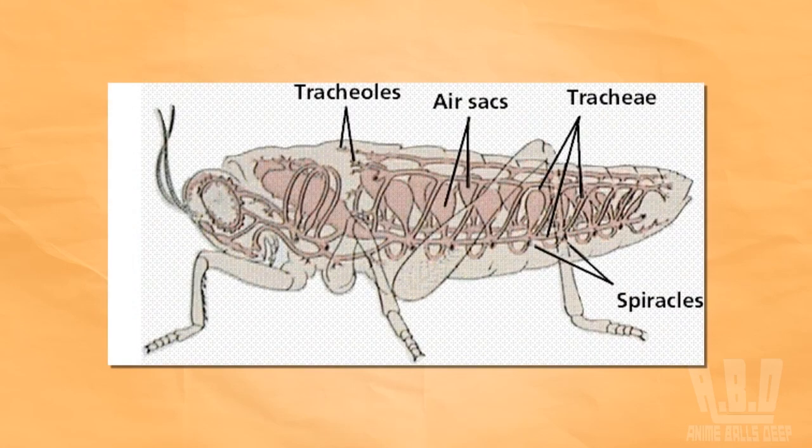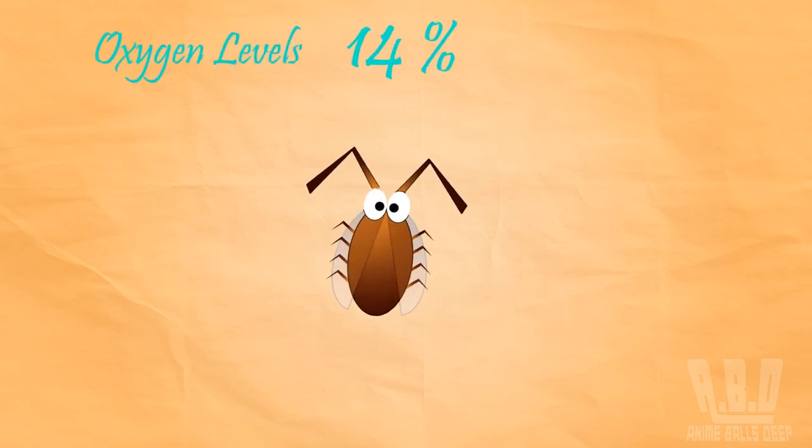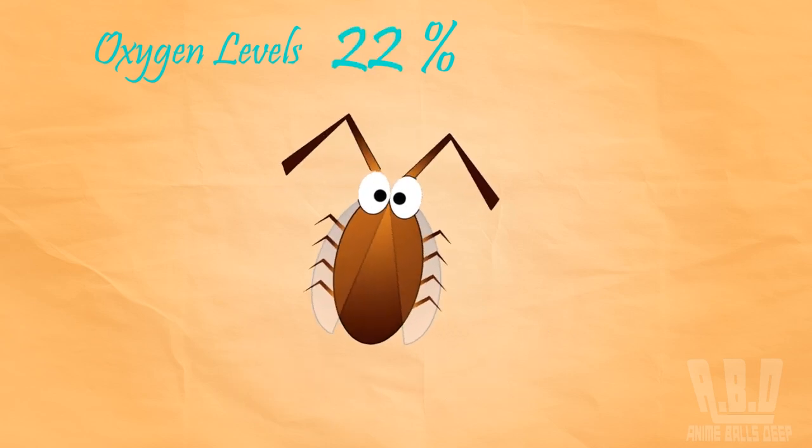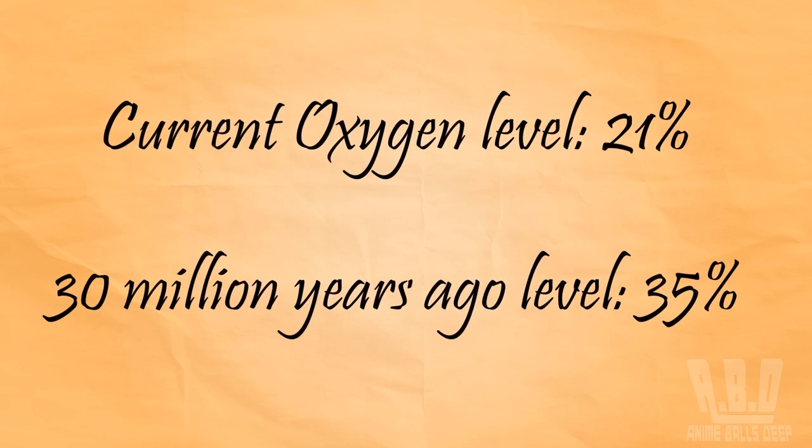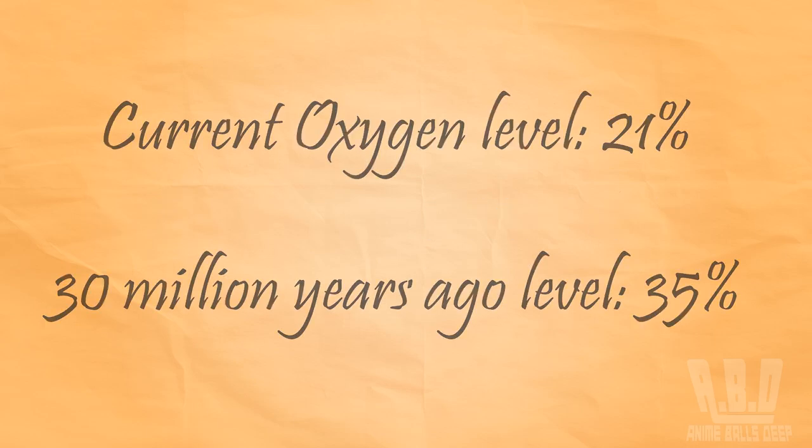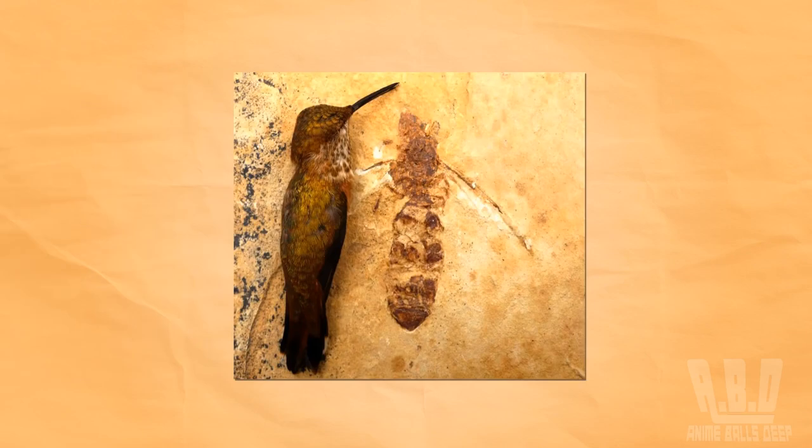Insects breathe through tubes known as tracheas. The theory is that the size of an insect is restricted by the amount of oxygen that can be sucked through its trachea. So the higher oxygen levels in the air, the bigger the insect. This would explain why 300 million years ago, when the oxygen in the air was 14% higher than it is nowadays, there were dragonflies with six-foot wingspans and ants as big as small birds.